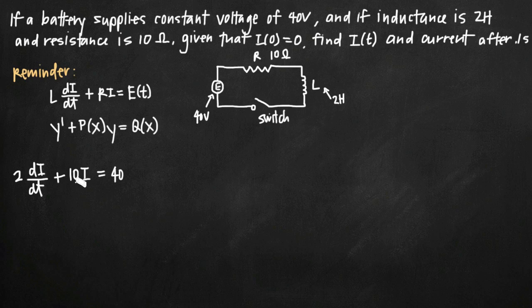Now, we'll solve this like we would any other linear differential equation. The first thing we want to do is divide through our equation by 2 to remove the coefficient on this di over dt term. And we'll get di/dt + 5i = 20.